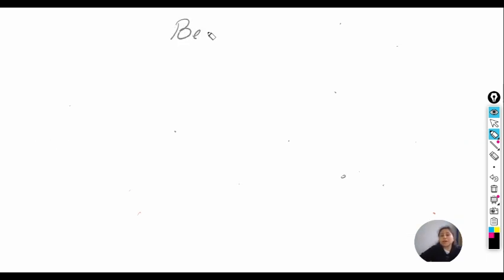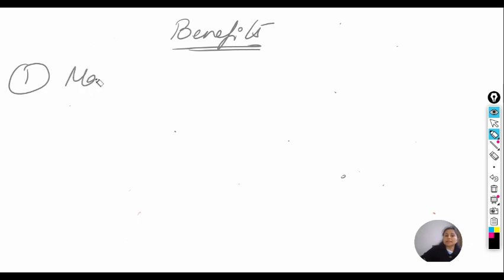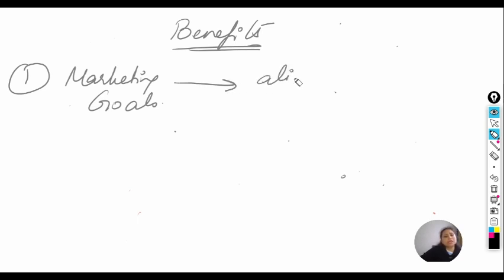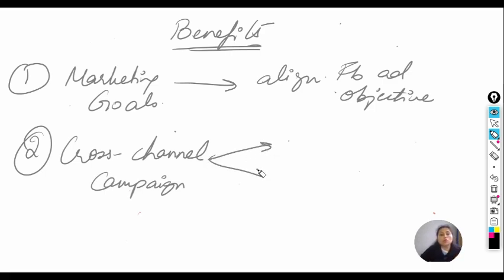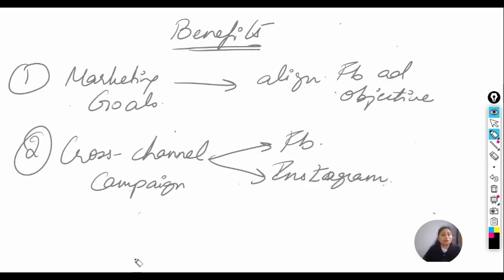Let us discuss the benefits of using this Facebook ad campaign. The first benefit is that if you have decided your marketing goals clearly and precisely, you can easily align them with the Facebook ad objectives. The second benefit is the cross-channel campaign, which helps you target your audience on both Facebook and Instagram using the same ad objectives.